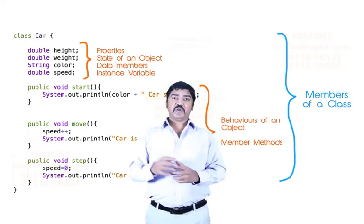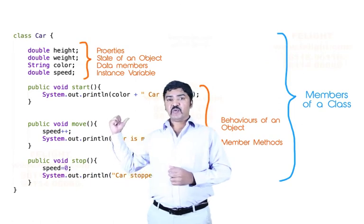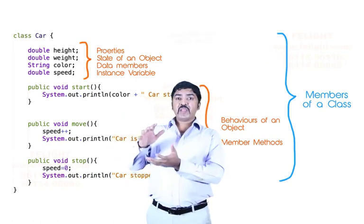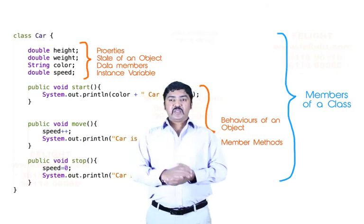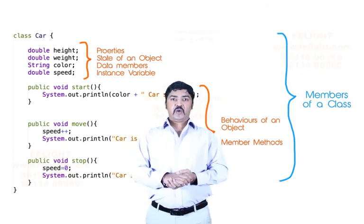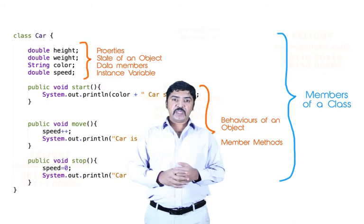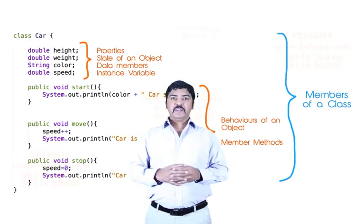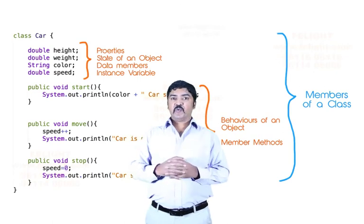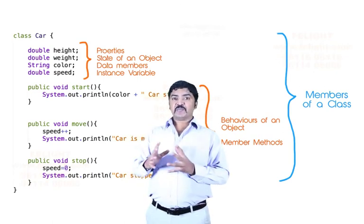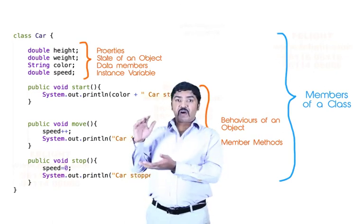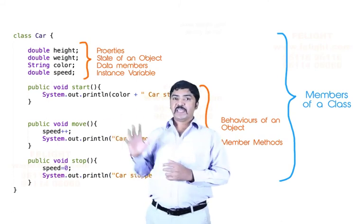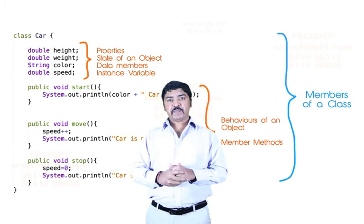...of Car gets allocated. They'll ask you the question: what is an object? Your answer should be: an object is an instance of a class. When we say instance, what are we pointing to? Instance means the memory is allocated for all the members of a class. So if I say 'new Car', memory is allocated for all the members of the Car class.